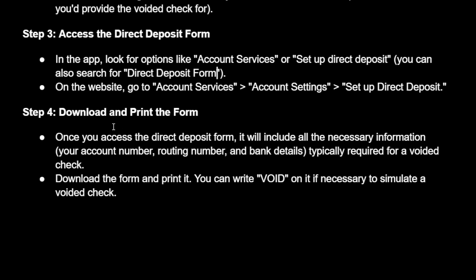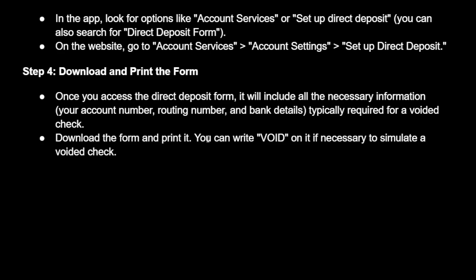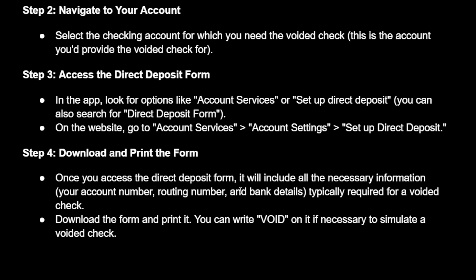Download and print the form. Once you access the direct deposit form, it will include all the necessary information — your account number, routing number, and bank details typically required for a voided check. Download the form, print it, and you can write VOID on it if necessary to simulate a voided check.